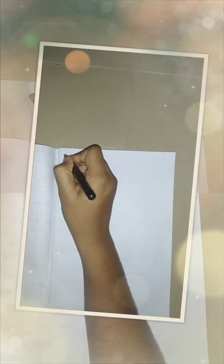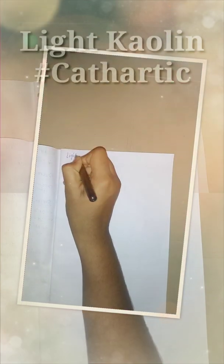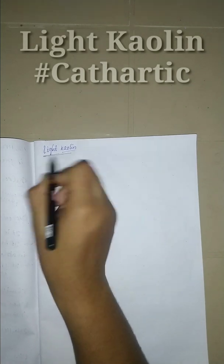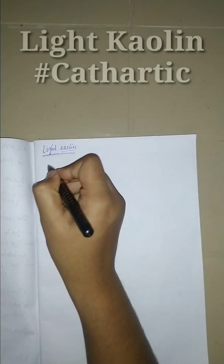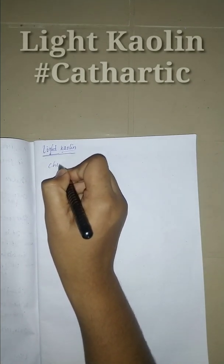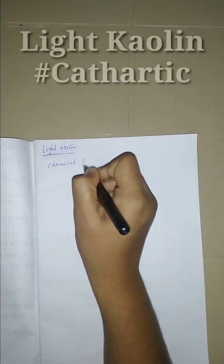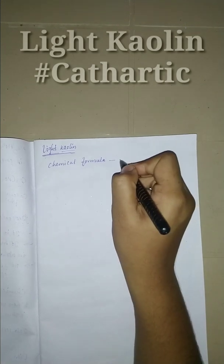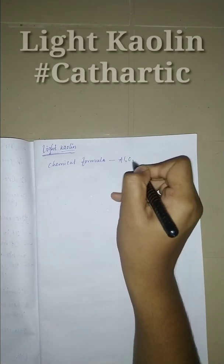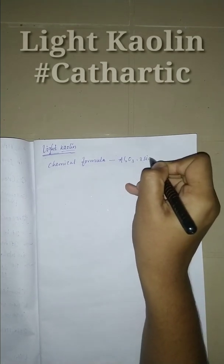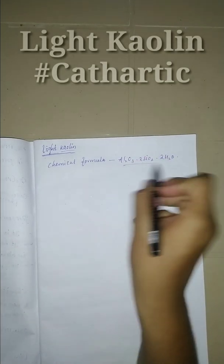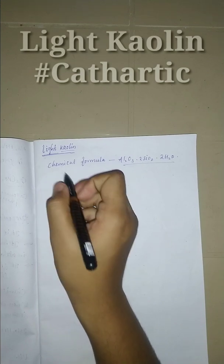Hey guys, I'm here to explain about the topic in pharmacognosy that is light kaolin. The chemical formula of light kaolin is Al2O3.2SiO2.2H2O. This is the approximate formula of light kaolin.